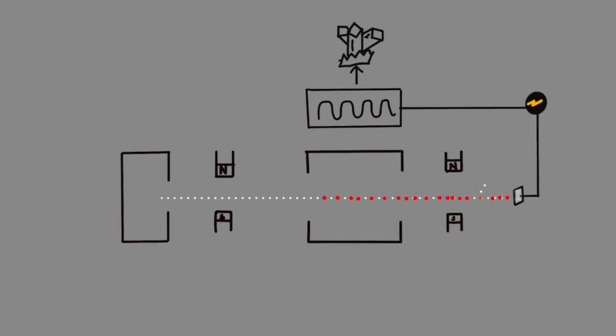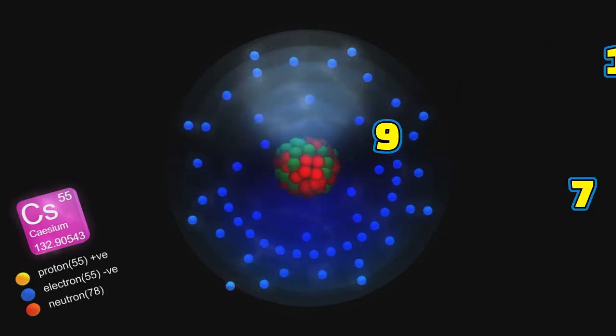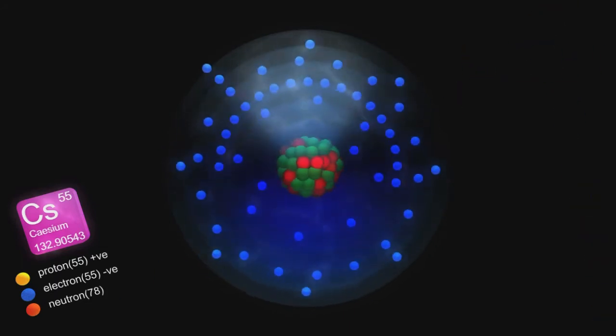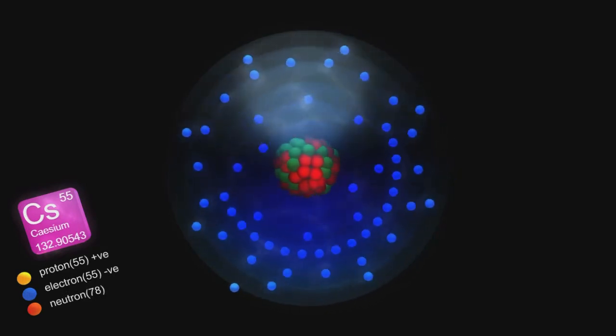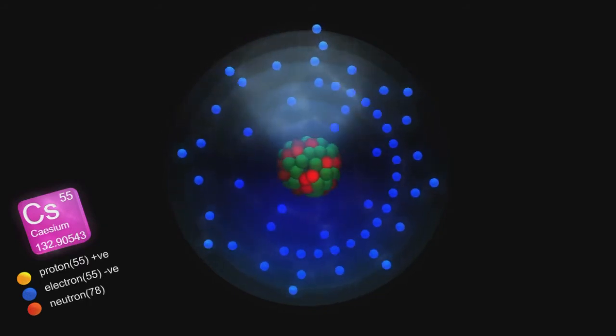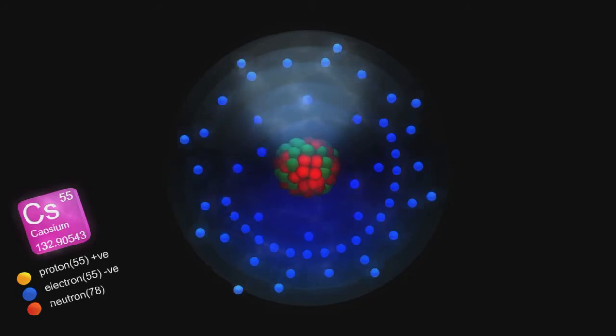If you have the time, you can use the atomic clock. What is the Cesium atom? You can use the atomic clock for timekeeping. You can use the Cesium atom. The International Committee for Weights and Measures will use the Cesium atom. You can use the atomic clock.